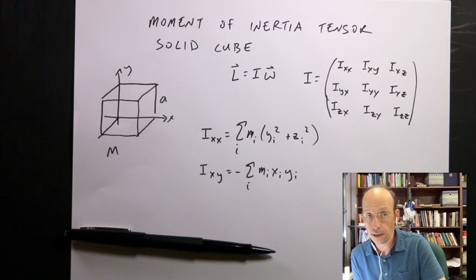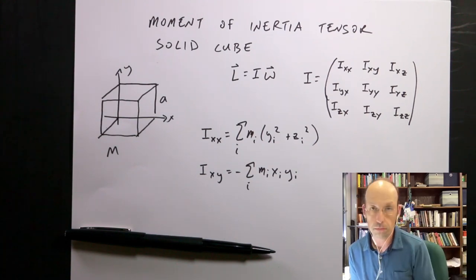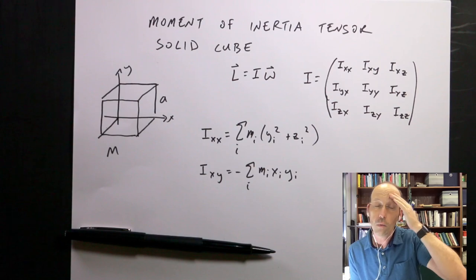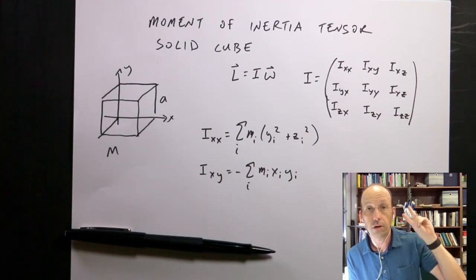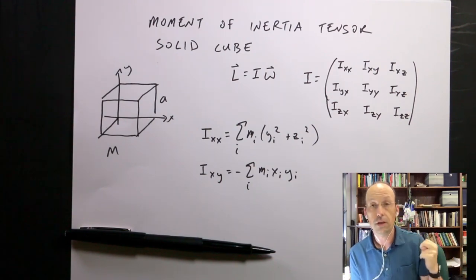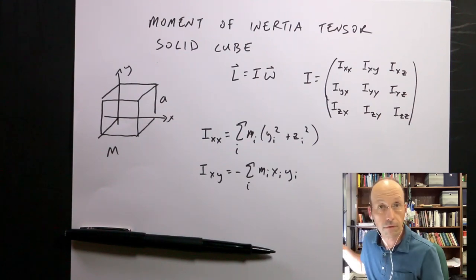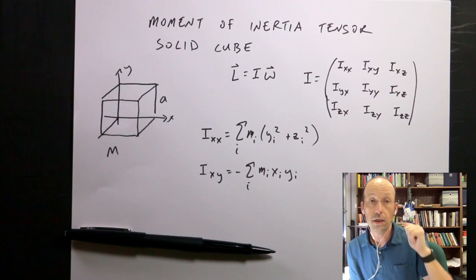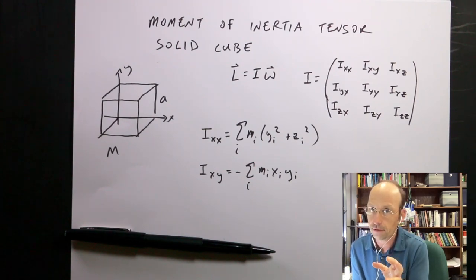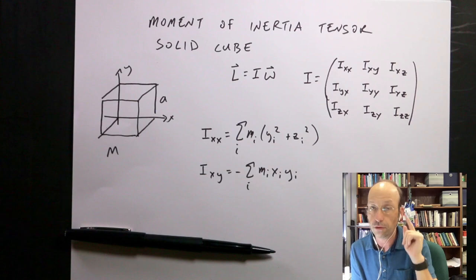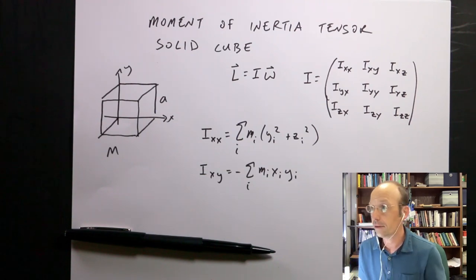I want to calculate the moment of inertia tensor for a cube, and I want to do it two ways. I'm going to do it on paper right here, and then I'm going to do it numerically using Python. So step one is to do this analytically — let's get to it.